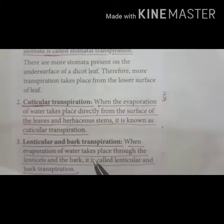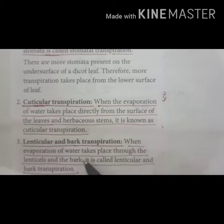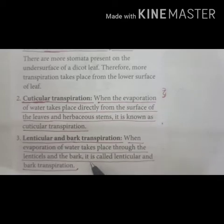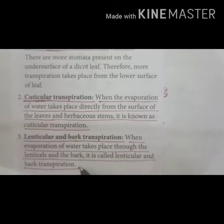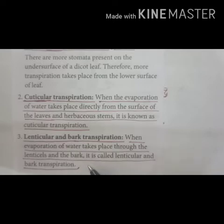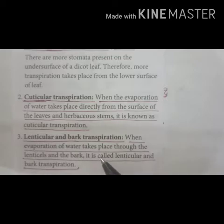Next is lenticular and bark transpiration. When evaporation of water takes place through the lentices and the bark, it is called lenticular transpiration. Lentices are the tiny pores which are present on the bark of old woody trees. I think all of you have seen the bark of old woody trees in mango trees.